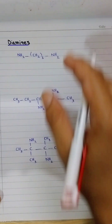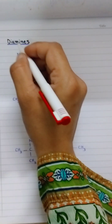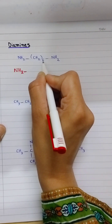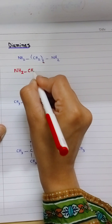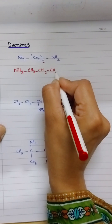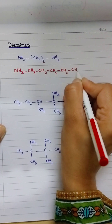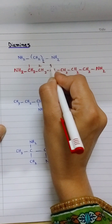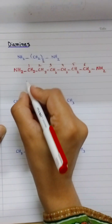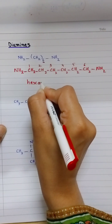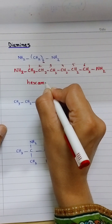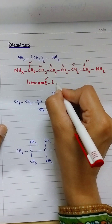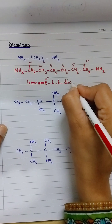Next we move to diamines — compounds which contain 2 amino groups. In the first diamine example, the chain starts with NH2, followed by CH2 six times, then NH2 again. The longest chain is numbered 1 through 6. The chain is represented as hexane. Important rule: if the chain contains more than one amino group, the 'e' of alkane is NOT replaced — it is kept. The first amino group is at carbon 1, the second at carbon 6. Two amino groups: use 'di' and end name 'amine' — hexane-1,6-diamine.